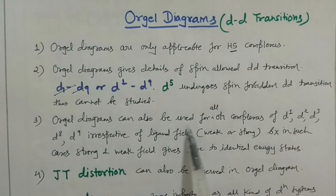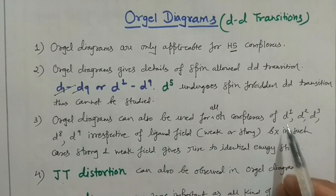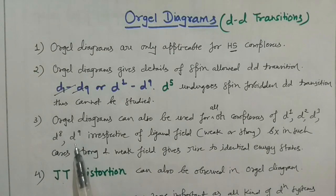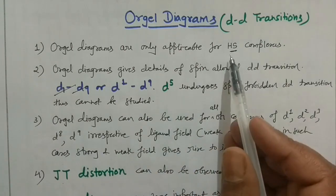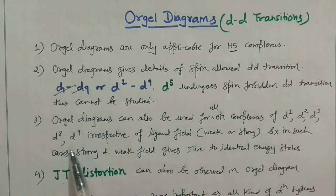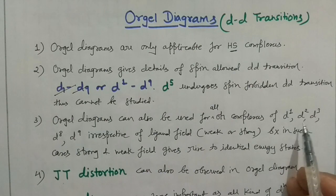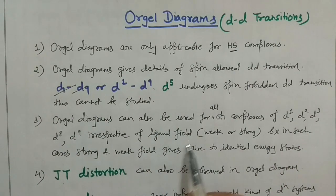Third point: Orgel diagrams can also be used for octahedral complexes like d1, d2, d3, d8, and d9. For these systems, strong field and weak field give no difference because they are identical energy states. So it is not necessary to consider only weak field high-spin complexes — for d1, d2, d3, d8, d9 it works irrespective of the ligand field strength.